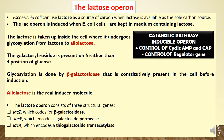Key points about the lac operon: it is a catabolic pathway because we are converting lactose with the help of beta-galactosidase into glucose and galactose. It is an inducible operon because allolactose acts as inducer by removing the repressor from the operator, helping transcription of structural genes. It is under two controls: positive control by cyclic AMP and CAP, and negative control by the regulator gene which produces a repressor protein.